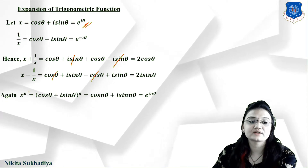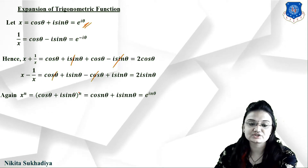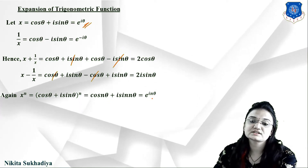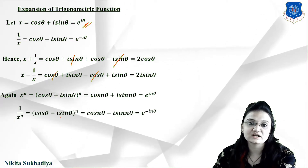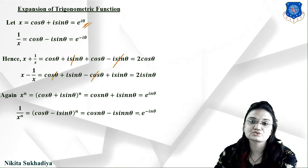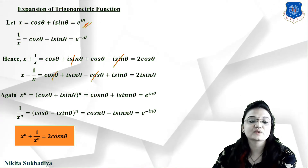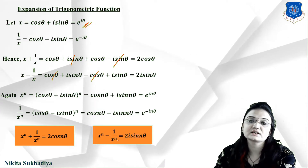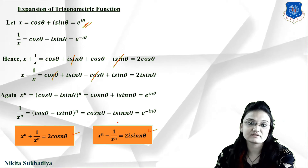Now for x^n: since x = cosθ + isinθ, we get x^n = (cosθ + isinθ)^n. By De Moivre's theorem, this becomes cos(nθ) + isin(nθ) = e^(inθ). Similarly, 1/x^n = cos(nθ) − isin(nθ) = e^(−inθ). Therefore: x^n + 1/x^n = 2cos(nθ) and x^n − 1/x^n = 2isin(nθ). These formulas will be used in our examples.